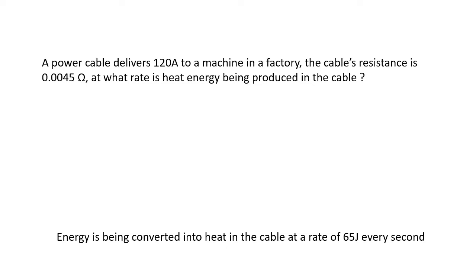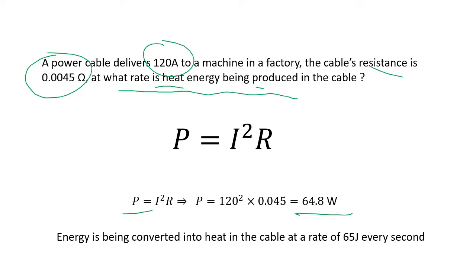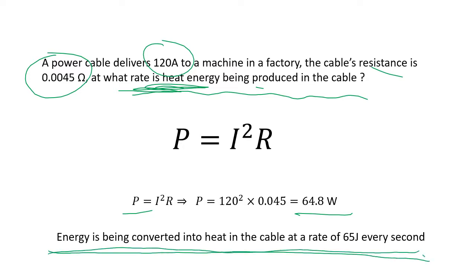A power cable delivers 120 amps to a factory machine; the cable's resistance is 0.0045 ohms — at what rate is heat energy being converted in the cable? This is resistive heating, so use P = I²R: P = 120² × 0.0045 = 64.8 W. Rounding to 2 significant figures, the energy is being converted into heat in the cable at a rate of 65 joules every second.